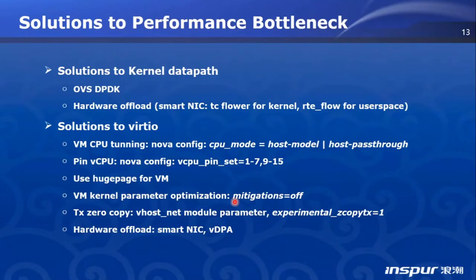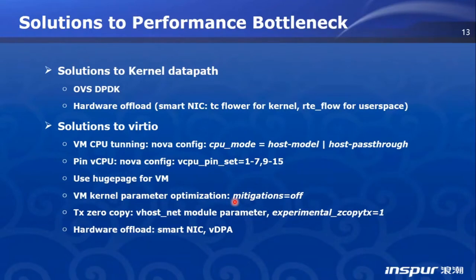OVS can also do this by TC flower in kernel datapath — the developers call it TC datapath. It is totally different from the legacy kernel datapath because TC flower can be fully hardware offloaded to a SmartNIC, for example Mellanox ConnectX-6 or Netronome Agilio. OVS-DPDK can also use RTE flow to do this.